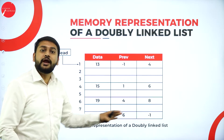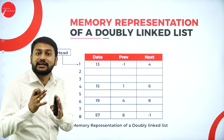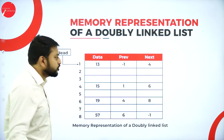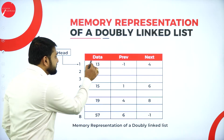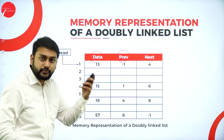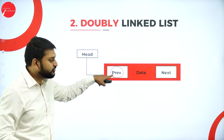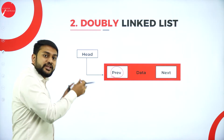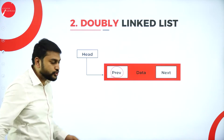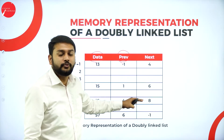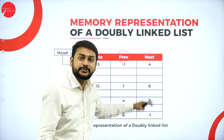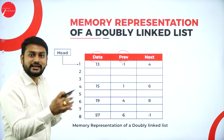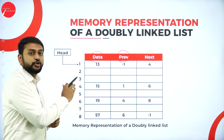Let me show how data is stored in the doubly linked list in memory. This table has three columns: data part, previous address, and next address. The previous address stores the address of the previous node, and the next address stores the address of the next node. Using this table we can form the doubly linked list.